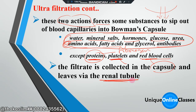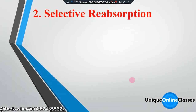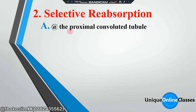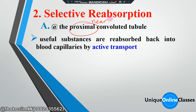The second process, after ultra-filtration, is selective absorption. In selective absorption, useful substances are absorbed back using active transport. That process of selective absorption requires energy.